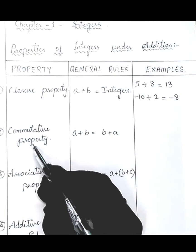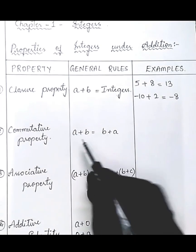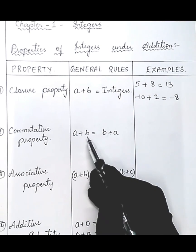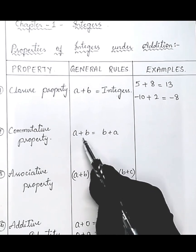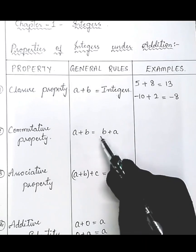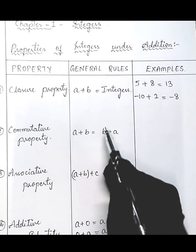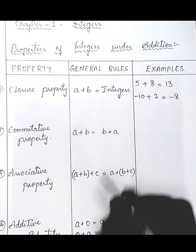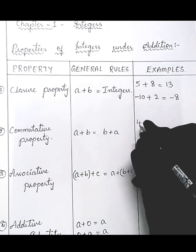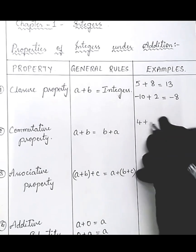The second property is commutative property. In this, if a and b are two integers, then a plus b equals b plus a. Let's understand this with an example. Suppose four is an integer.